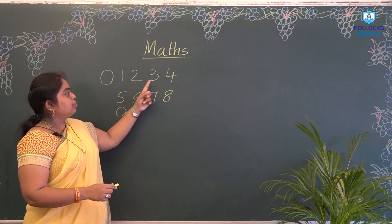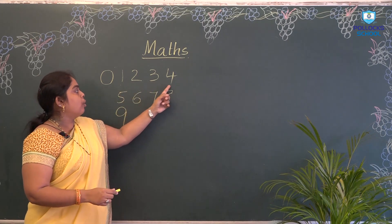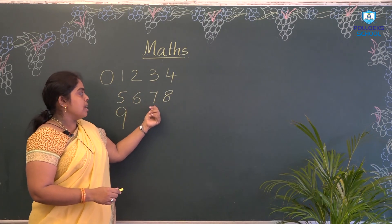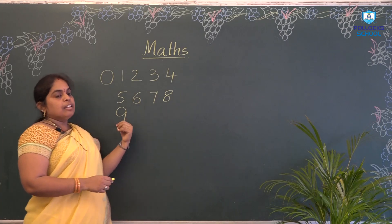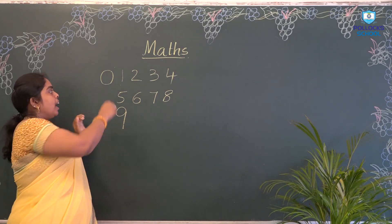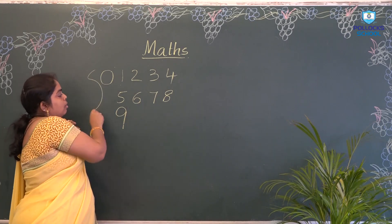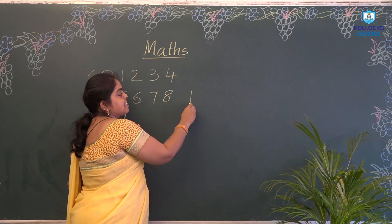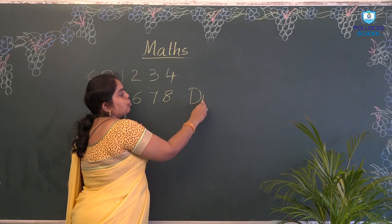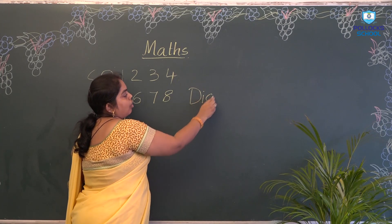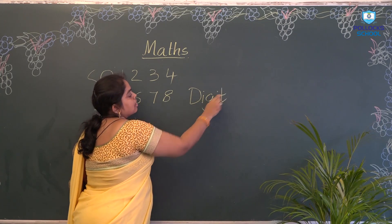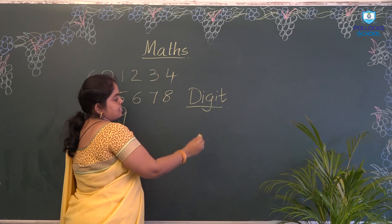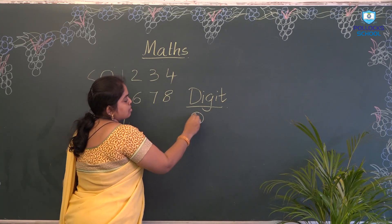So: 0, 1, 2, 3, 4, 5, 6, 7, 8, 9. And all of these we will call as digits. What will we call them? A digit. A particular name — digit.